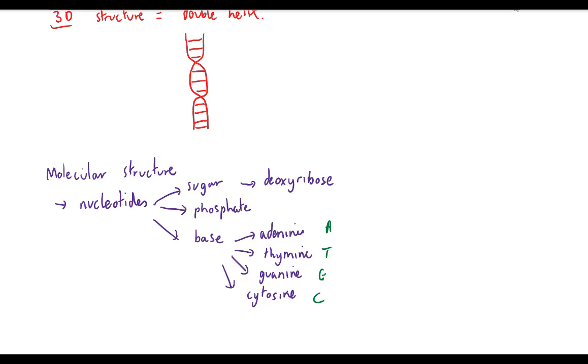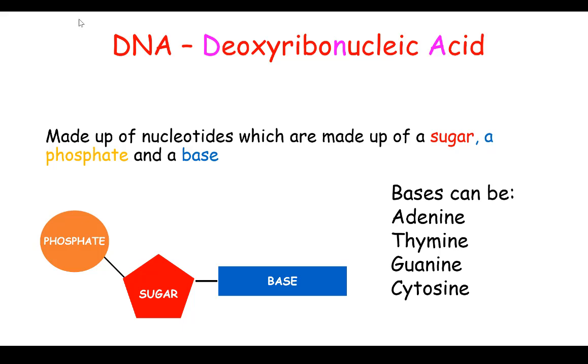What this means is that because the sugar is always deoxyribose in DNA and the phosphate is always phosphate, but the base can be any one of four, that means the DNA can be made up of four different nucleotides. So there's four different possible nucleotides for DNA. Each nucleotide contains the phosphate, the sugar which is deoxyribose, and one of four bases. The bases can be adenine, thymine, guanine, or cytosine.